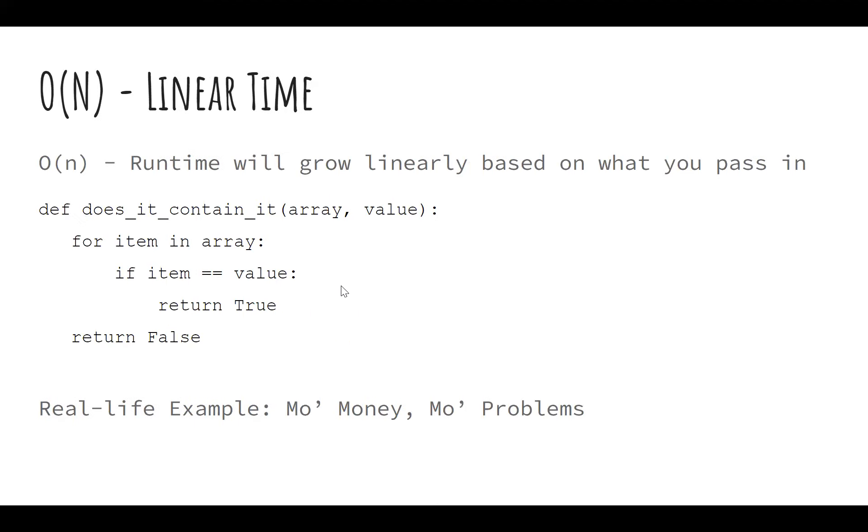Now, slightly more complicated is going to be a linear time function, which is what we talked about in that graph. That was that straight line. And a good example of something that traditionally has linear time is a for loop. Now, why would a for loop be linear time? Anyone want to volunteer an explanation or have ideas? Because the thing you're iterating through can be of any theoretical size. Exactly. Right. So, I mean, if the array you're iterating through has 10 elements, how many times are you going to run through it? 10 times. At the worst, right? I mean, in this case, where does it contain it? You can just run through it one time. Let's say the first element in the array is the value.